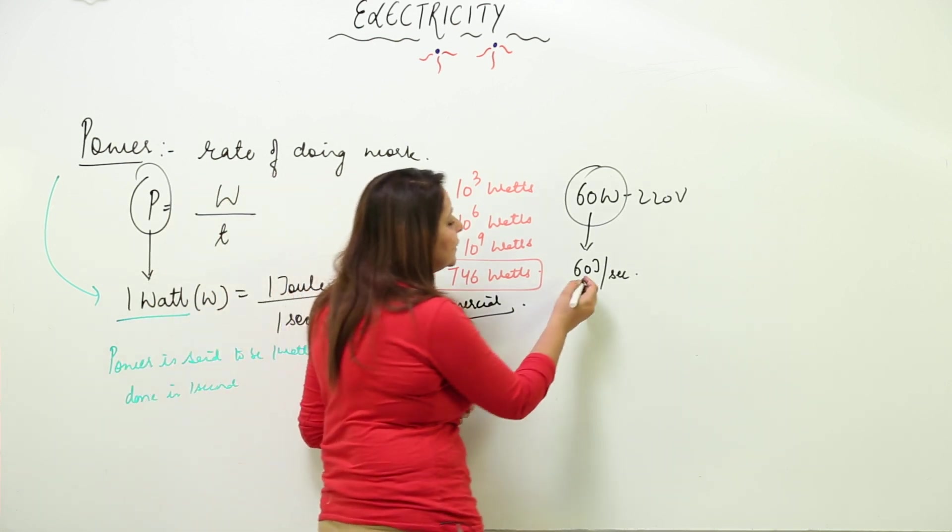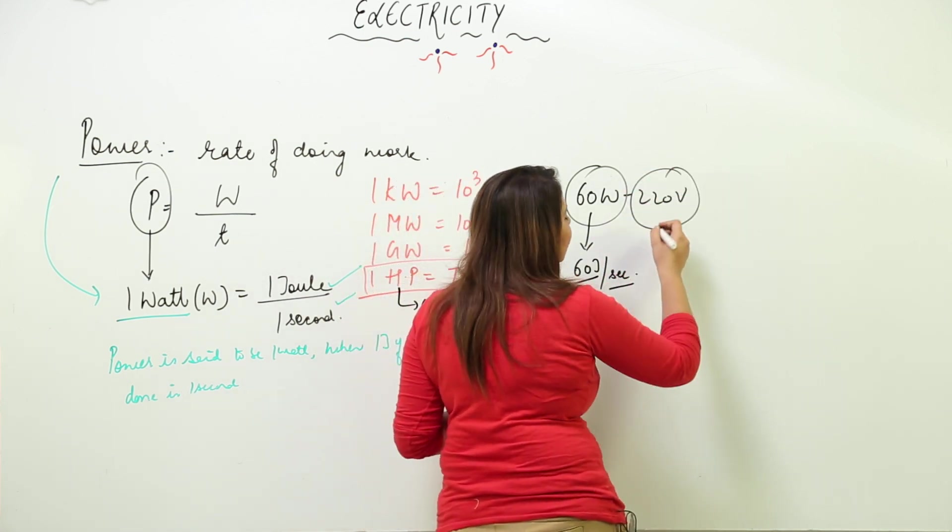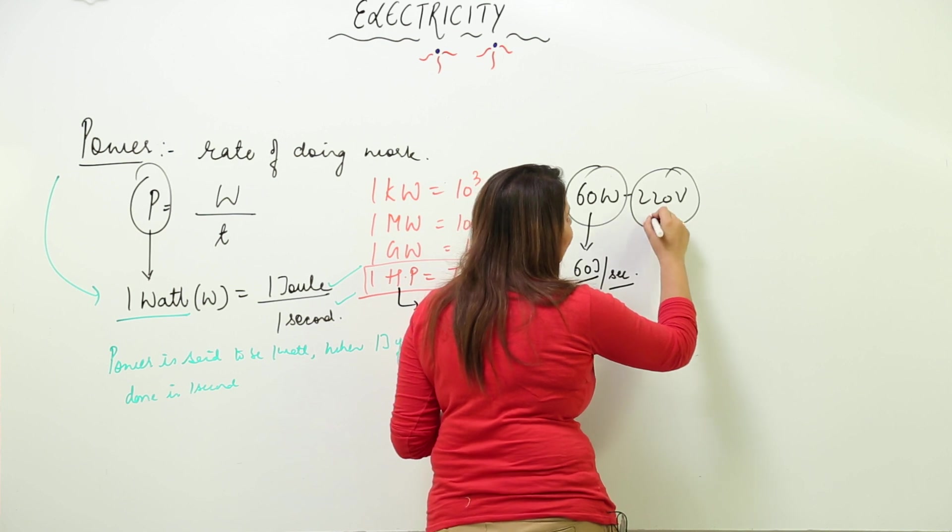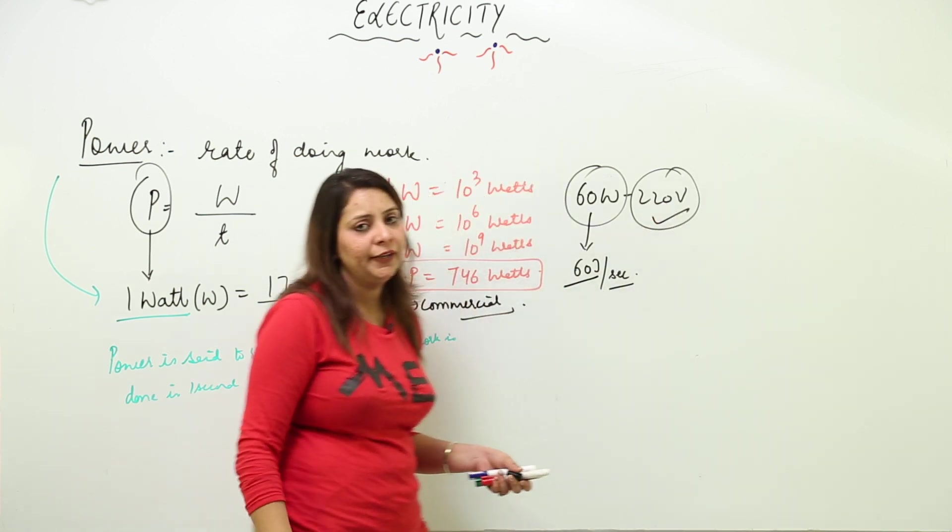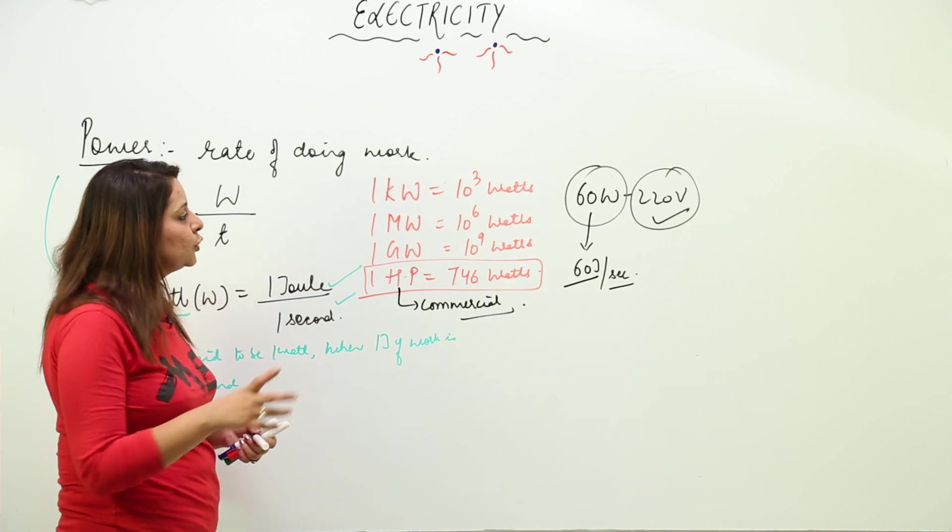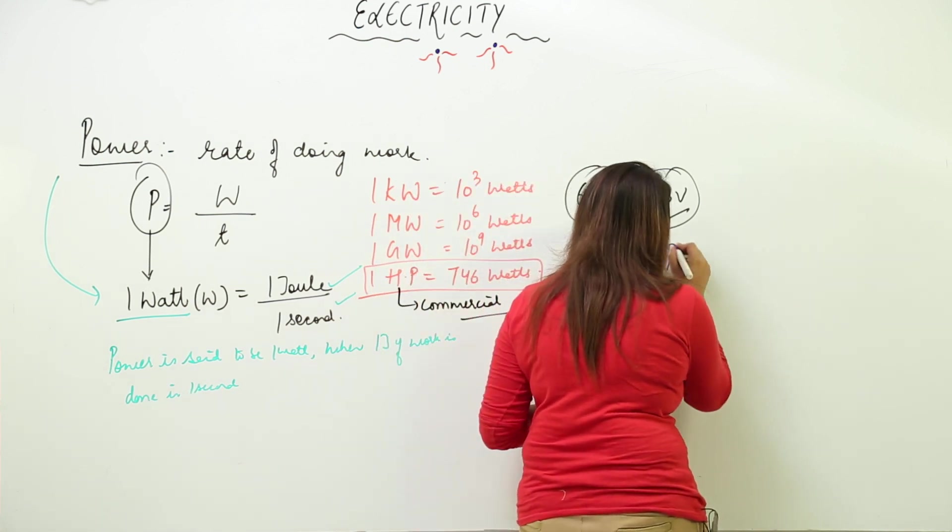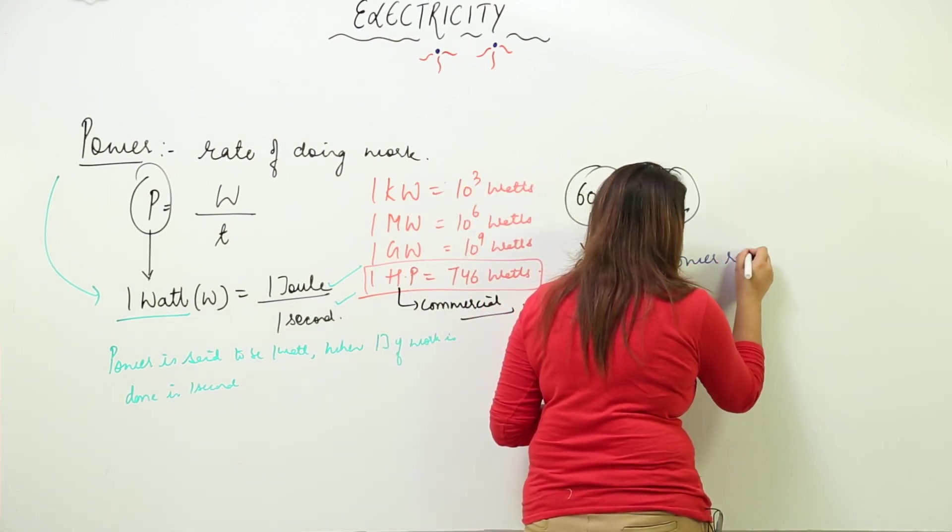220 volt means the minimum voltage required to operate it should be minimum 220. It won't work if the voltage is below 220. This is what is called the power rating.